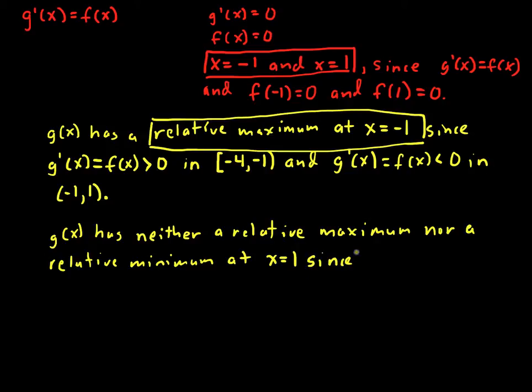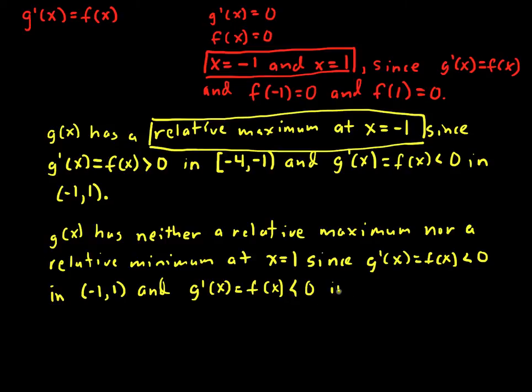since to the left, g prime of x equal to f of x is less than 0, negative, g is sloping downwards, in the interval negative 1, 1, and g prime of x equal to f of x is still less than 0 in the interval 1, 3,